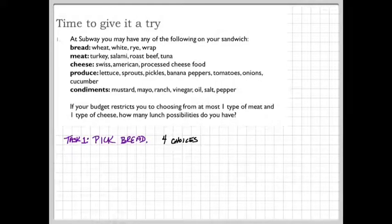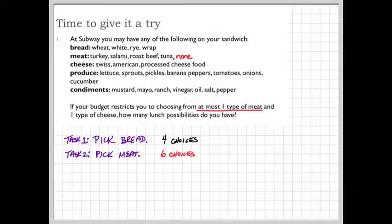Now, for meat, you can have at most one type of meat. There's turkey, salami, roast beef, and tuna. There are four types of meat here. But you might be a vegetarian, so you might choose no meat at all. In which case, there should be five choices for how you can pick your meat.